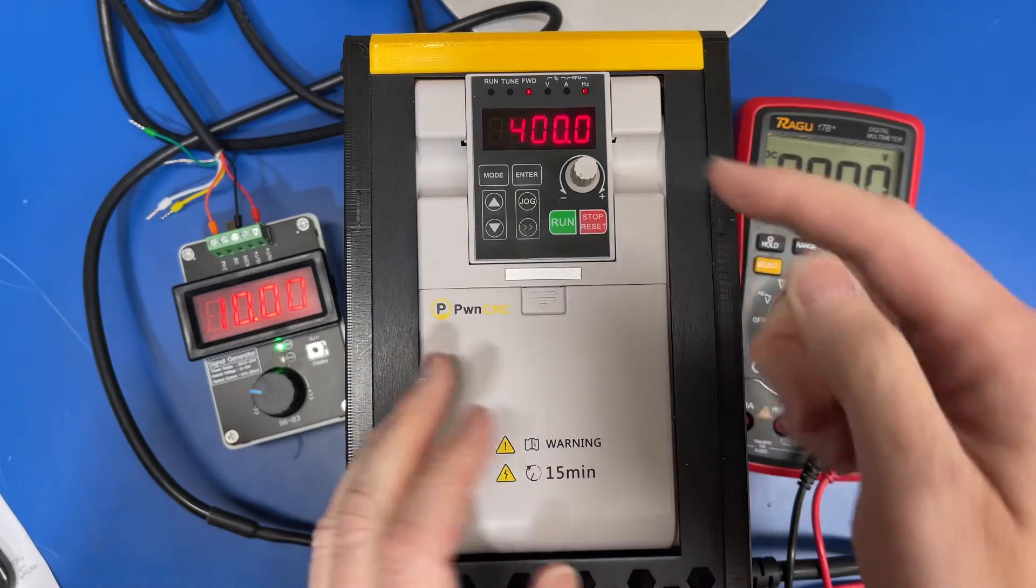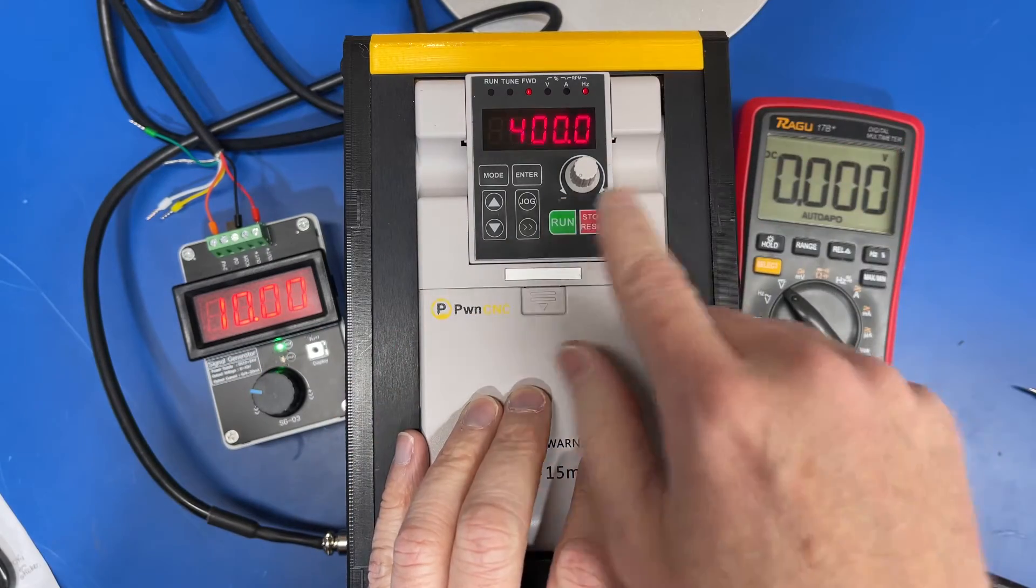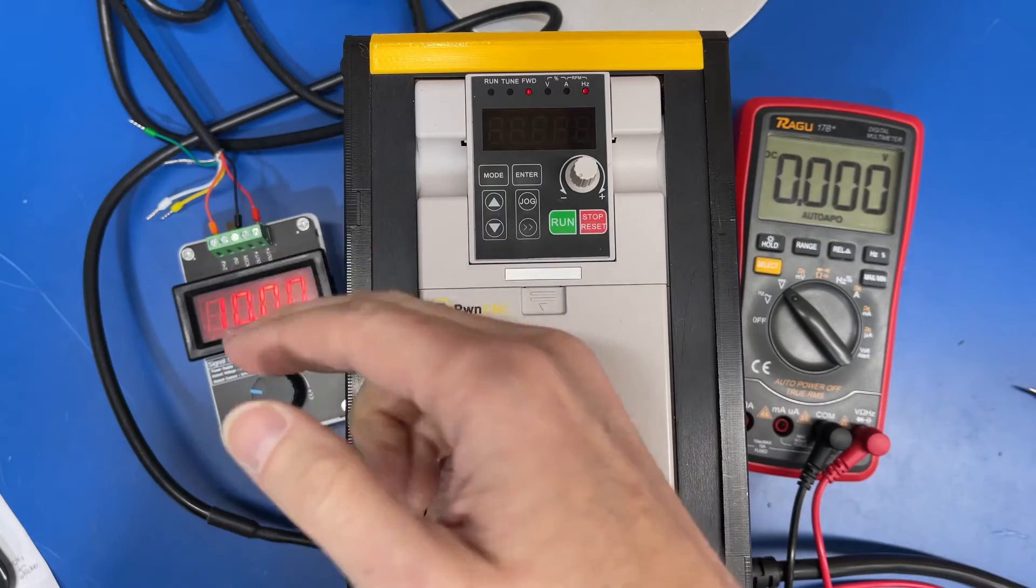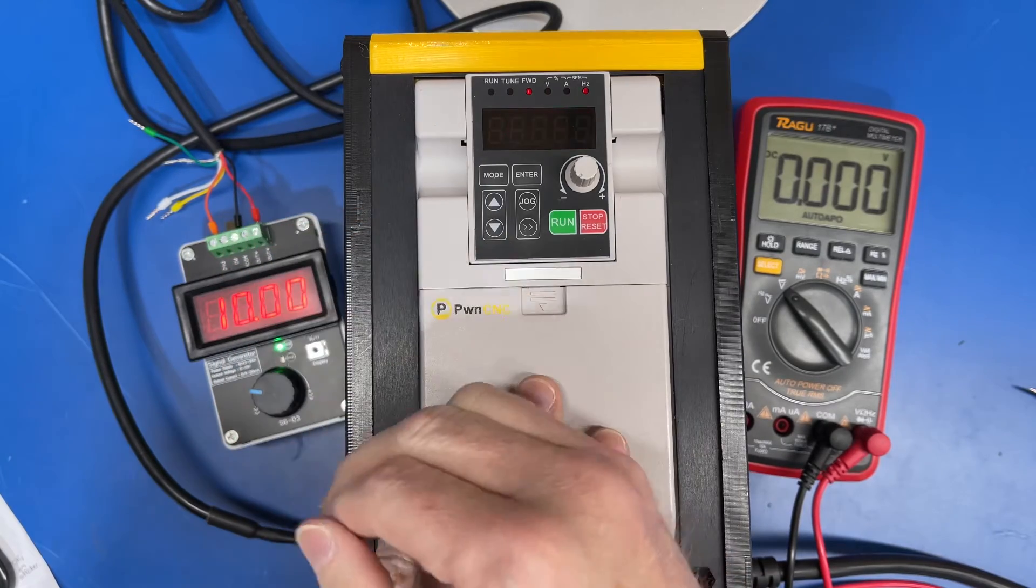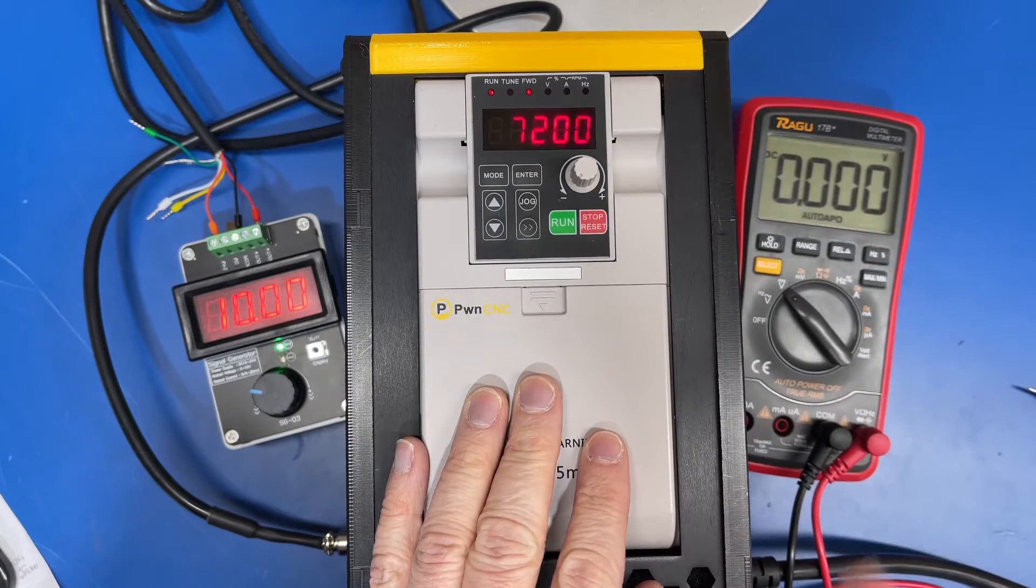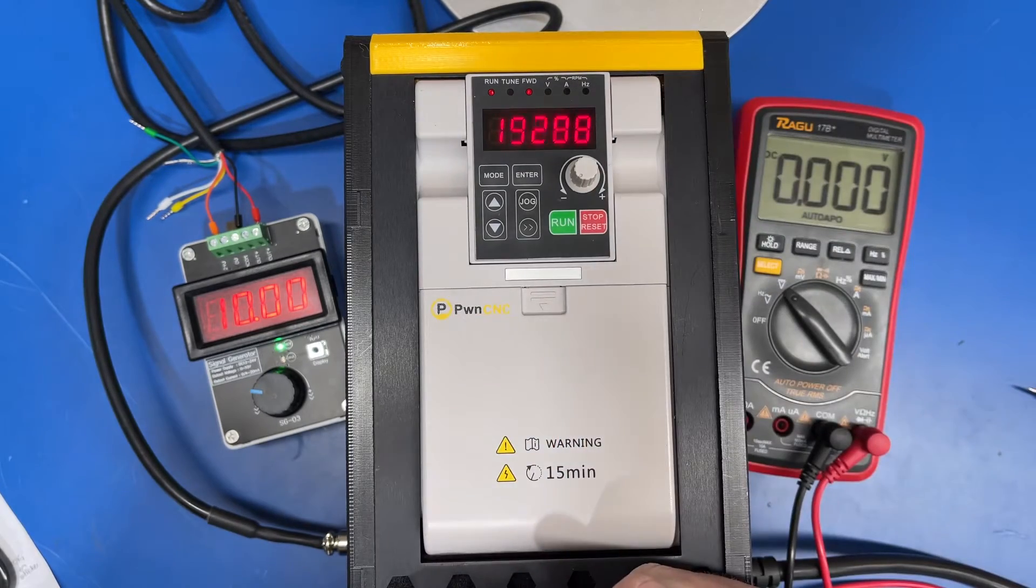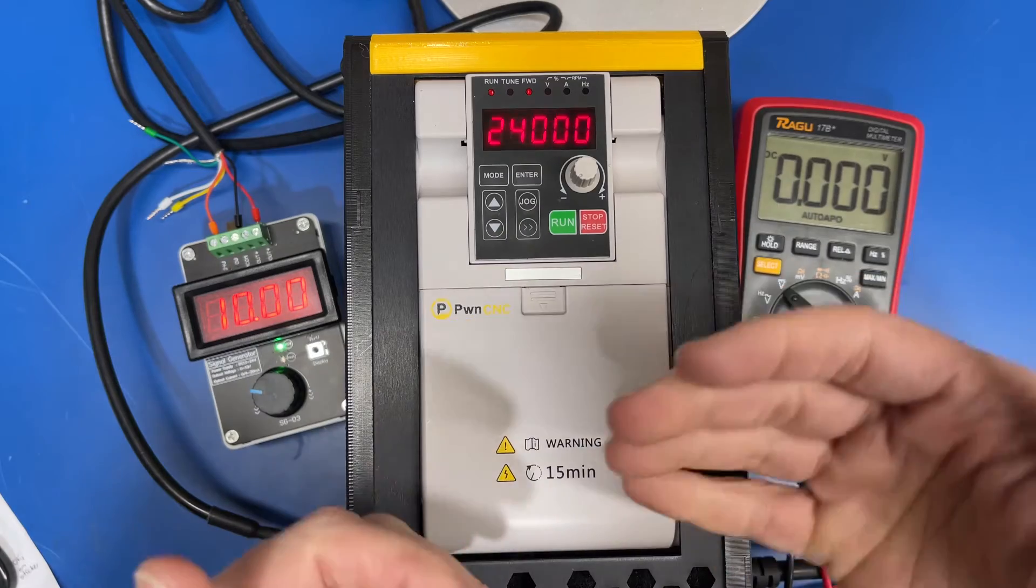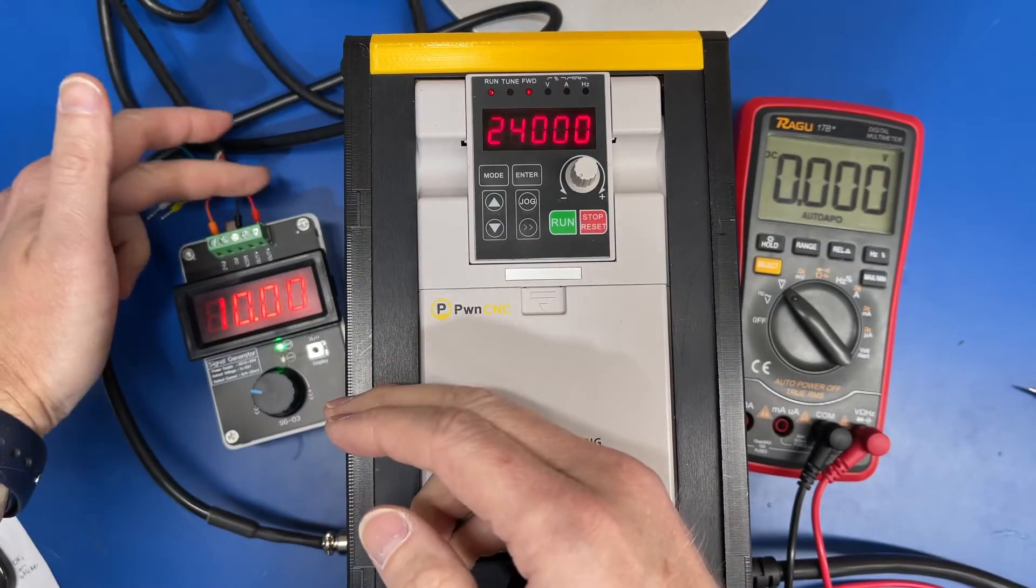So if we hit run, right now it's been blinking, so it's in stopped state, but it's still displaying what the voltage is coming across the black and red wires. So if we hit run, it basically ramps the VFD up to the 24,000, the maximum value for the input setting.